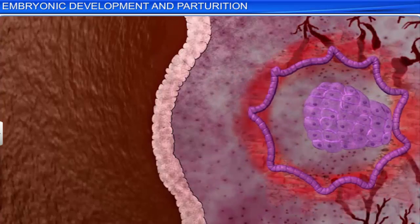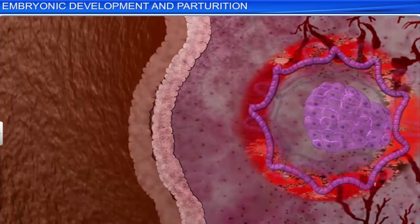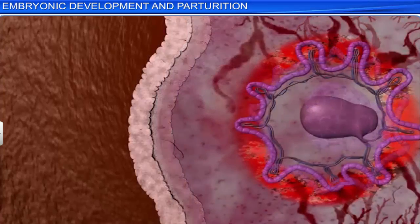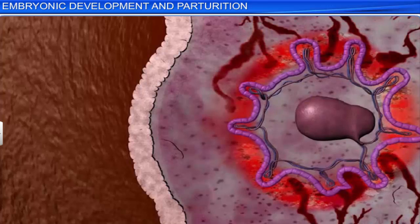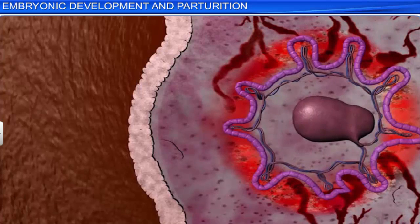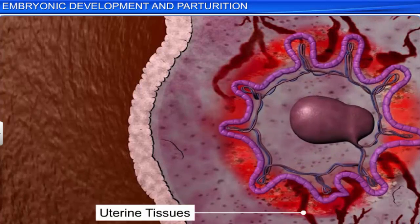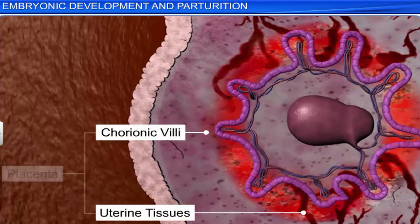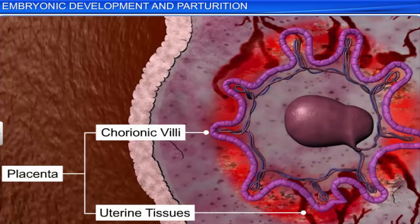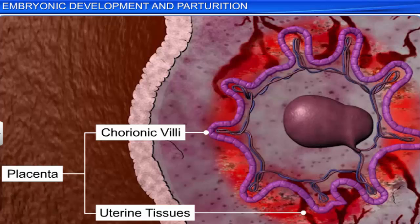As the chorionic villi grow further, they interlock with uterine tissues to form the placenta, a structural and functional unit between the developing embryo and the maternal body.